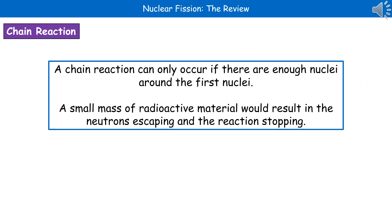A chain reaction will only occur if we have enough nuclei around our first nucleus. If we only had a very small mass of radioactive material, the neutrons would escape and the reaction would stop. It's only when we have a substantial amount of that material that we see the problem.